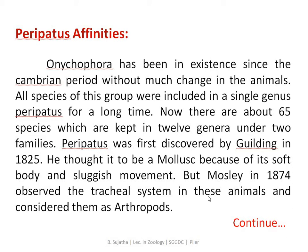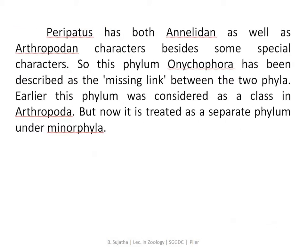Peripatus was first discovered by Guilding in May 1825. He thought it to be a molluscan because of its soft body and slug-like movement. But in 1874, scientists observed the tracheal system in these animals and considered them as arthropods.